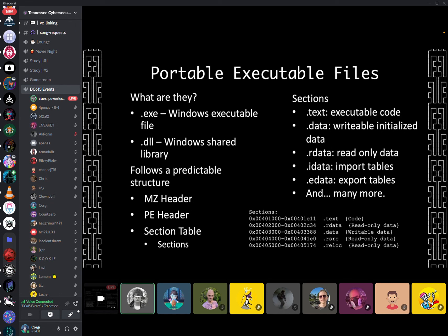What we're going to look at specifically right now is Portable Executable files — PE files. If you're running a .exe, that's going to be a PE file. A .dll is also a PE file, though it's not easily executable on its own. PE files follow a predictable structure: they have an MZ header, a PE header with additional information, and a section table that tells you about your different sections. The .text section is usually where your code is; .data is typically writable initialized data; you might have read-only data like strings, import tables, and export tables.